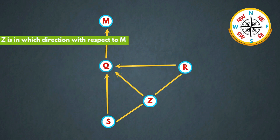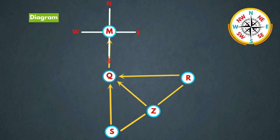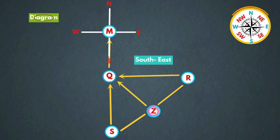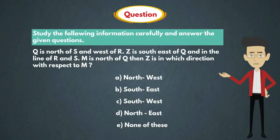Now in the question they are asking that Z is in which direction with respect to M? In the final diagram, it is clear that Z is in southeast direction with respect to M. So the answer is option B, southeast.